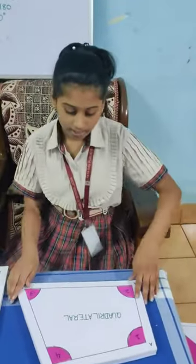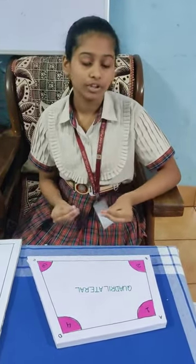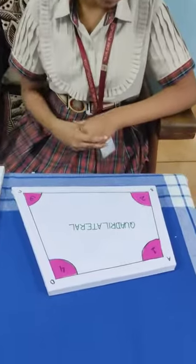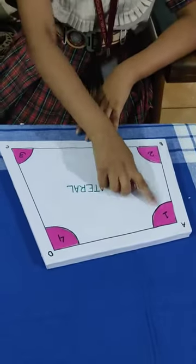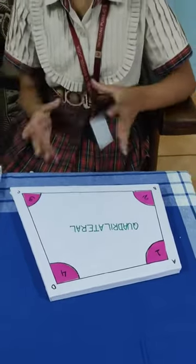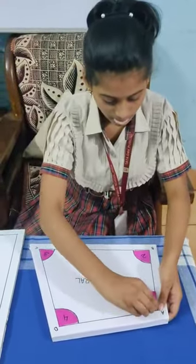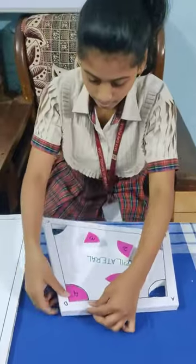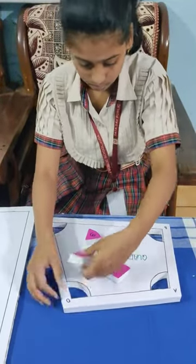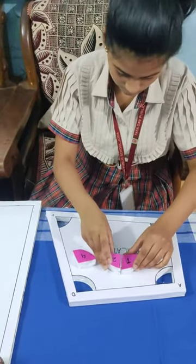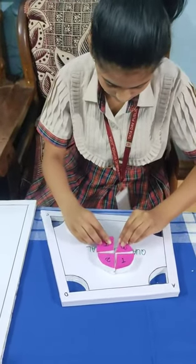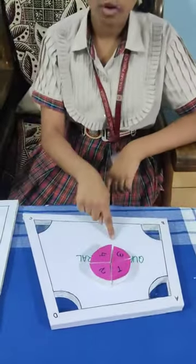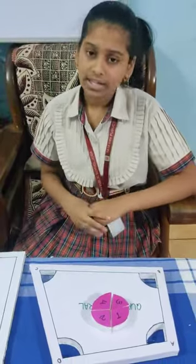Next, I want to describe the angle property of a quadrilateral. The angle property of a quadrilateral states that the sum of the interior angles of a quadrilateral is equal to 360 degrees. In this model, the interior angles of quadrilateral ABCD are angle 1, angle 2, angle 3, and angle 4. Let me join these four angles at a point. Here we can see that it forms a complete angle and it measures 360 degrees.